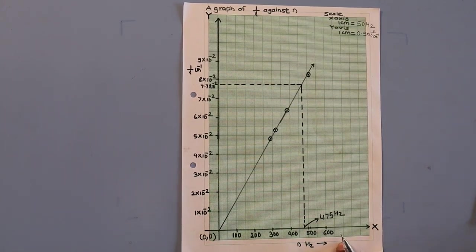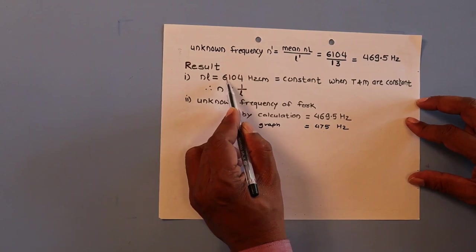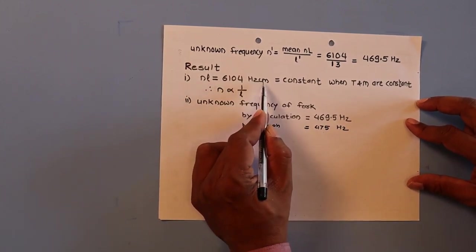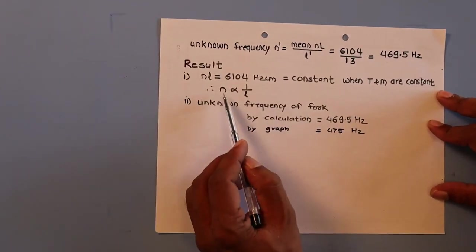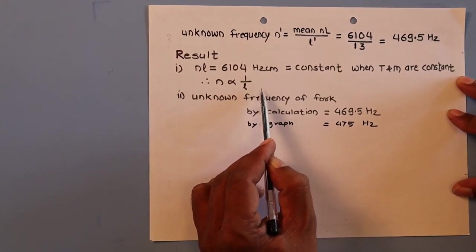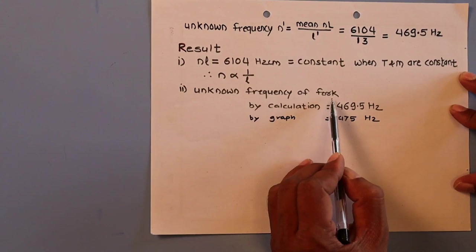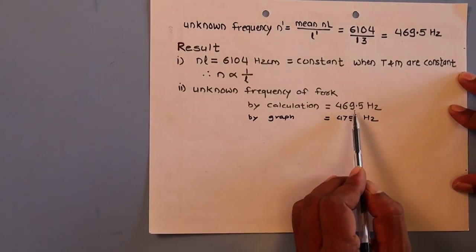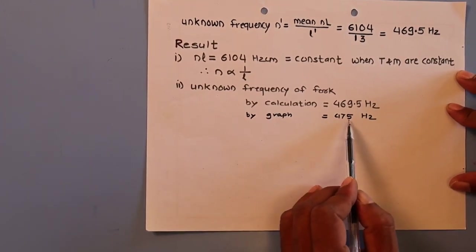In this way, we get the unknown frequency of the tuning fork from the graph as 475 Hz. In the result: the product N × L equals 6104 Hz·cm, which is constant when tension and mass per unit length are kept constant. Therefore, n is inversely proportional to L, and the first law — the law of length — is verified. The unknown frequency of the given tuning fork by calculation is 469.5 Hz and by graph is 475 Hz.